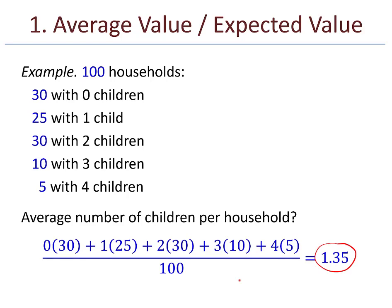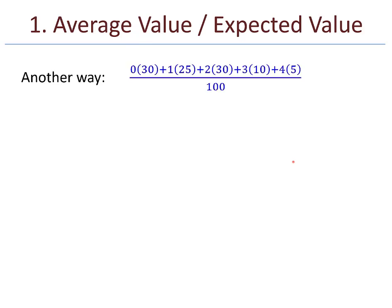You might also say that a household has an expected value of 1.35 children. If I pick one household at random from these 100 households, I expect there to be about 1.35 children. Here's another way of computing that: take that fraction and distribute the 100.